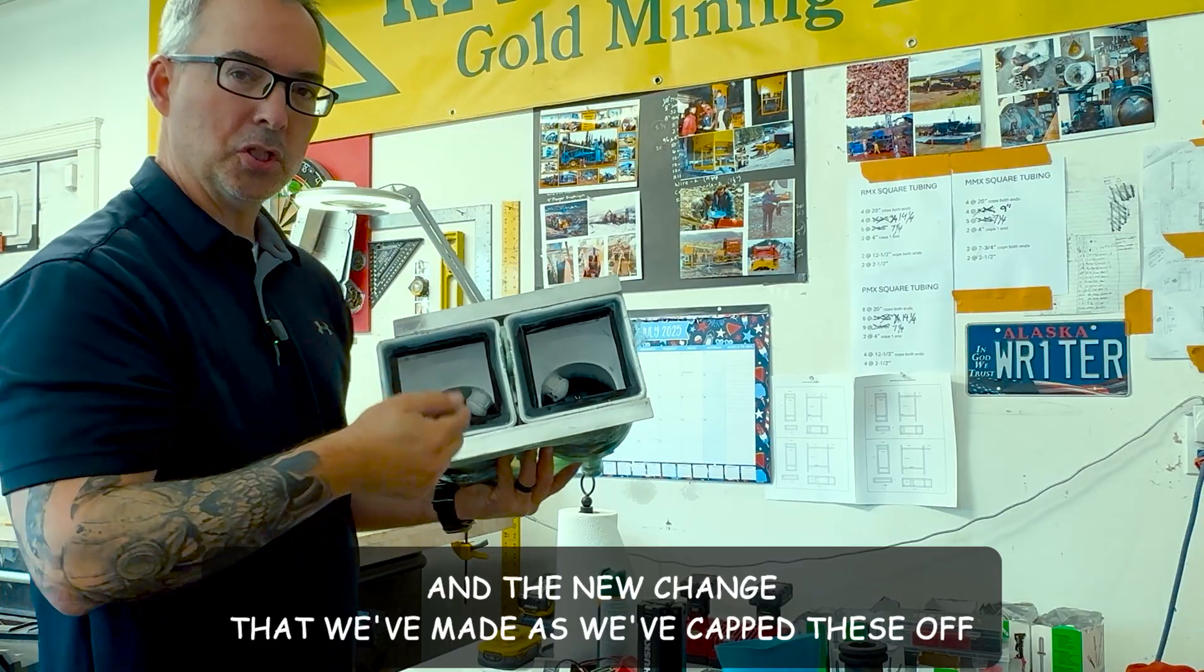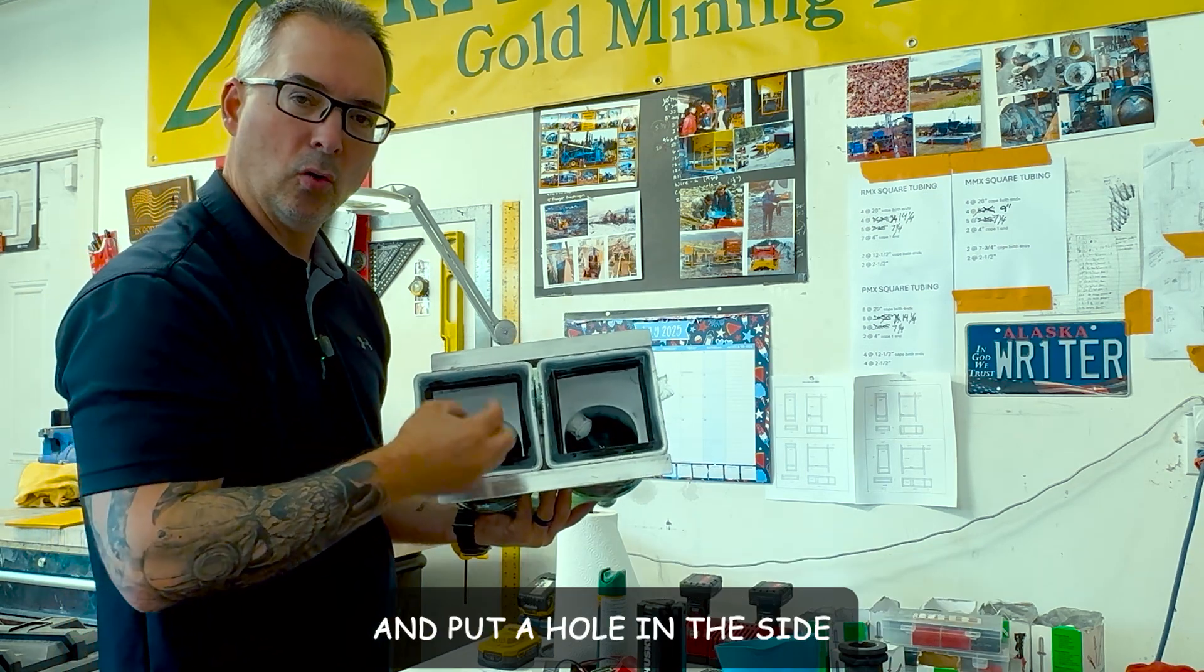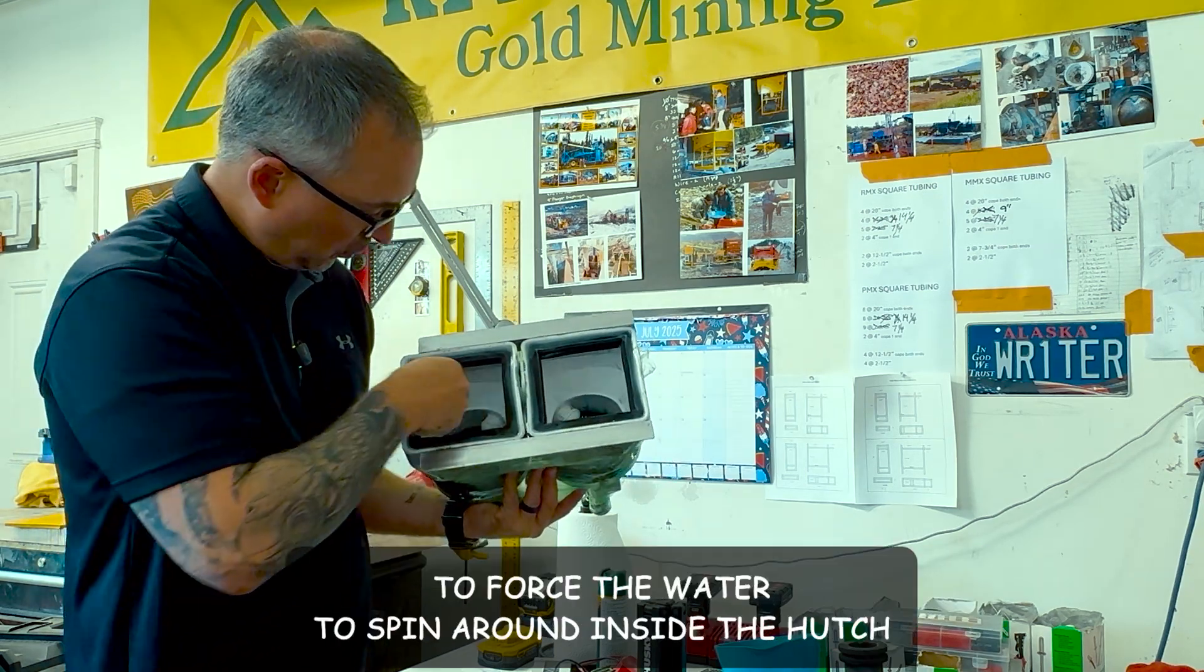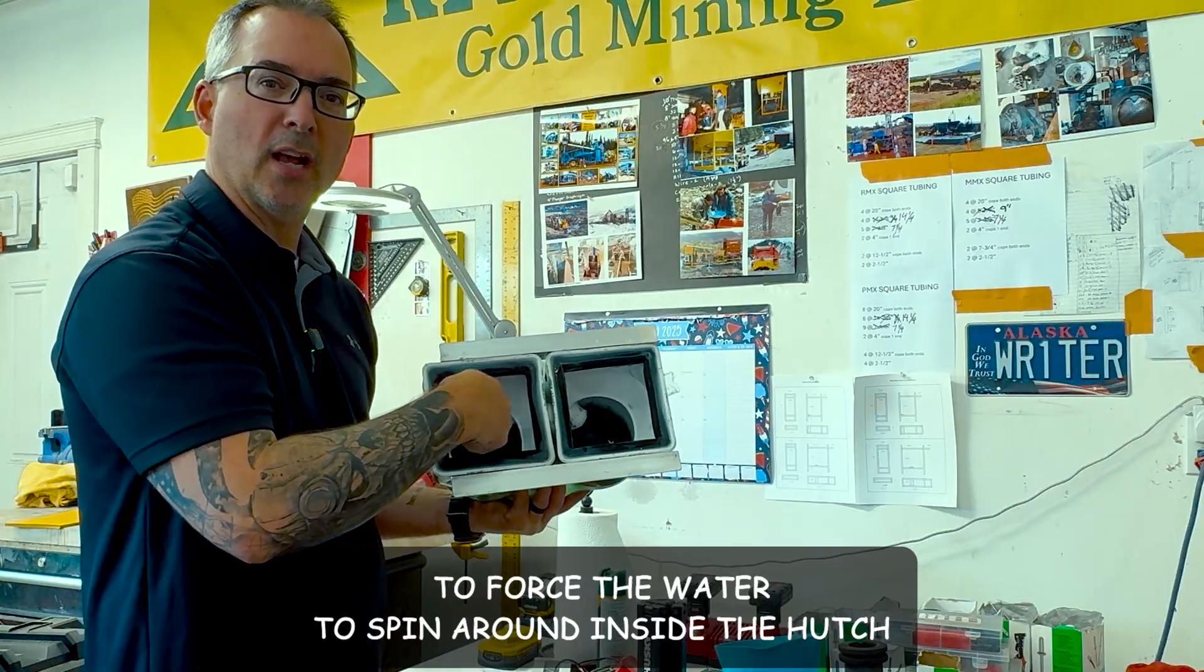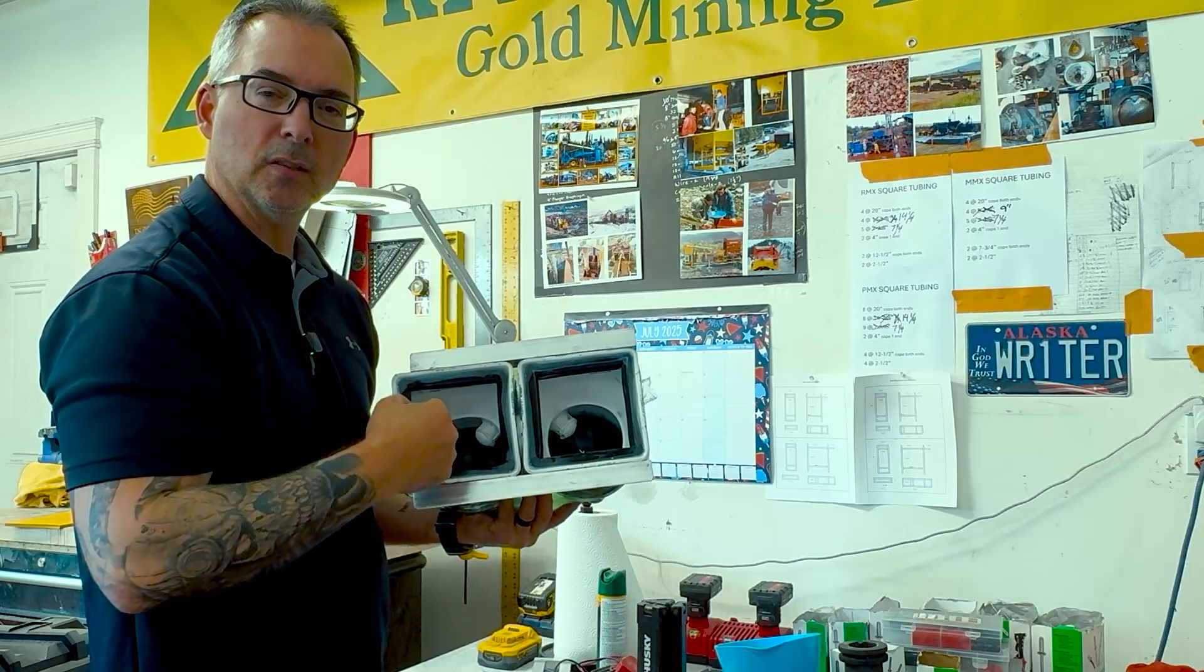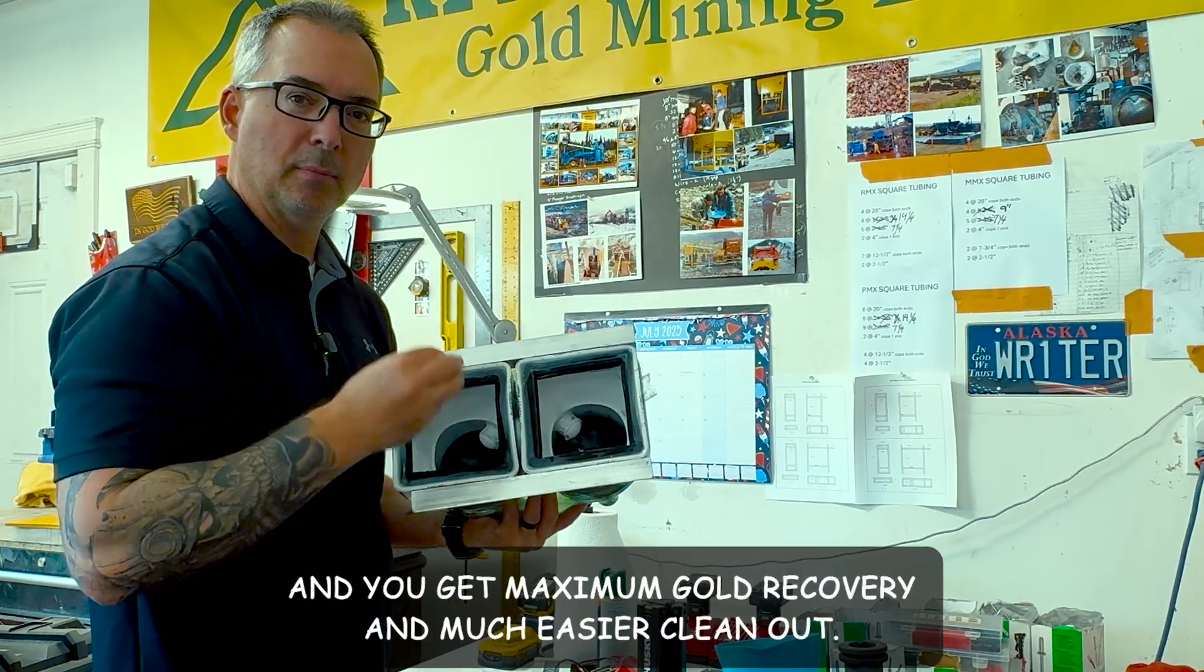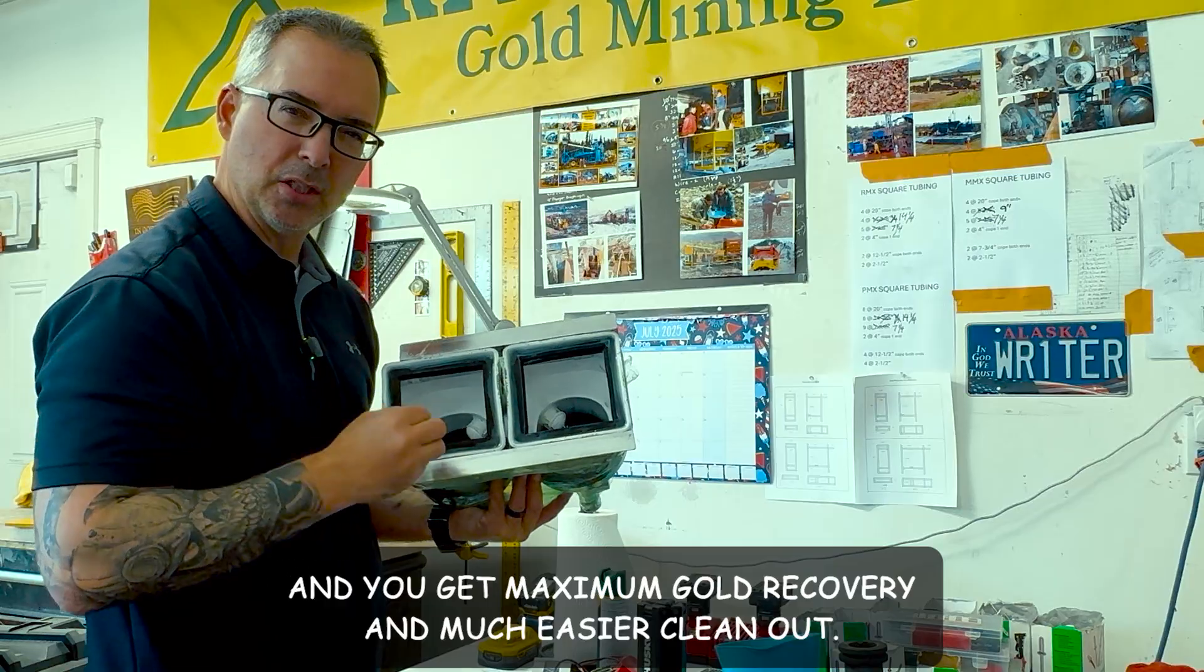And the new change that we've made is we've capped these off and put a hole in the side to force the water to spin around inside the hutch. And so that's creating a vortex in the center of each hutch, allowing the heaviest materials to fall right through. And you get maximum gold recovery and much easier clean out.